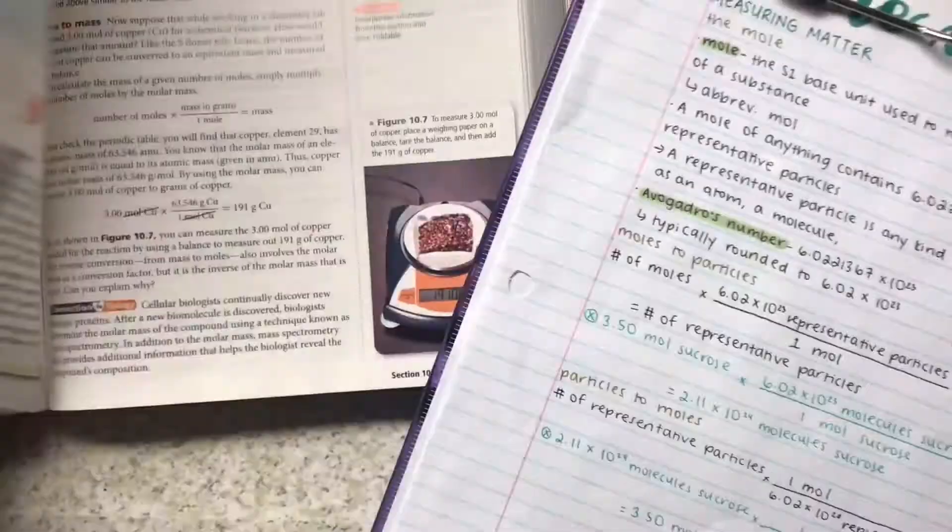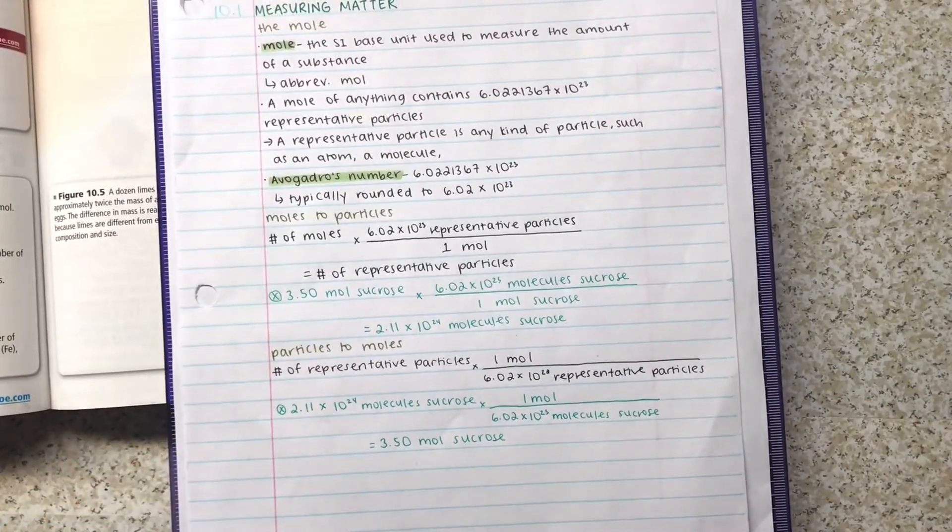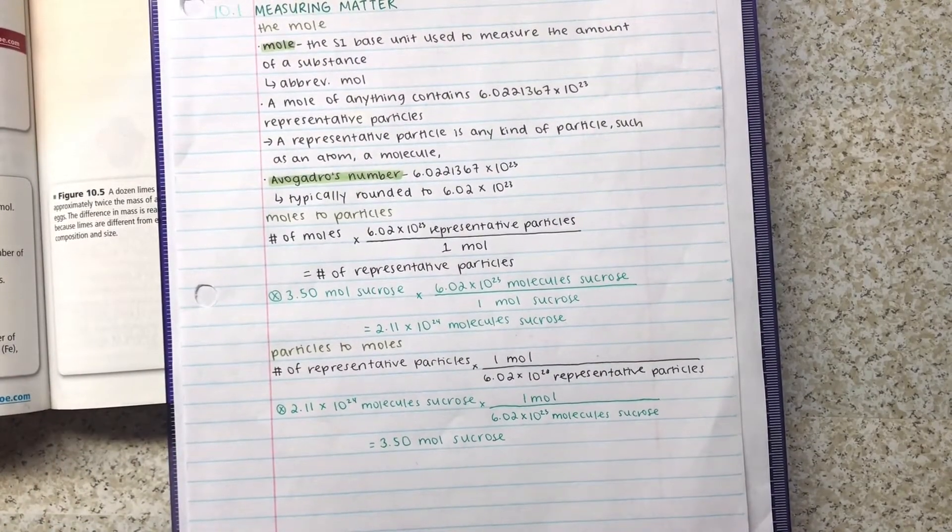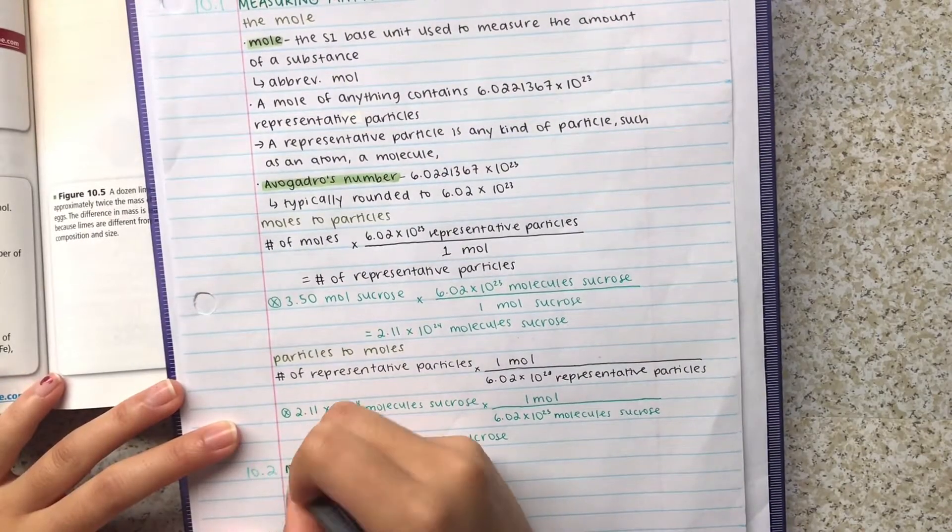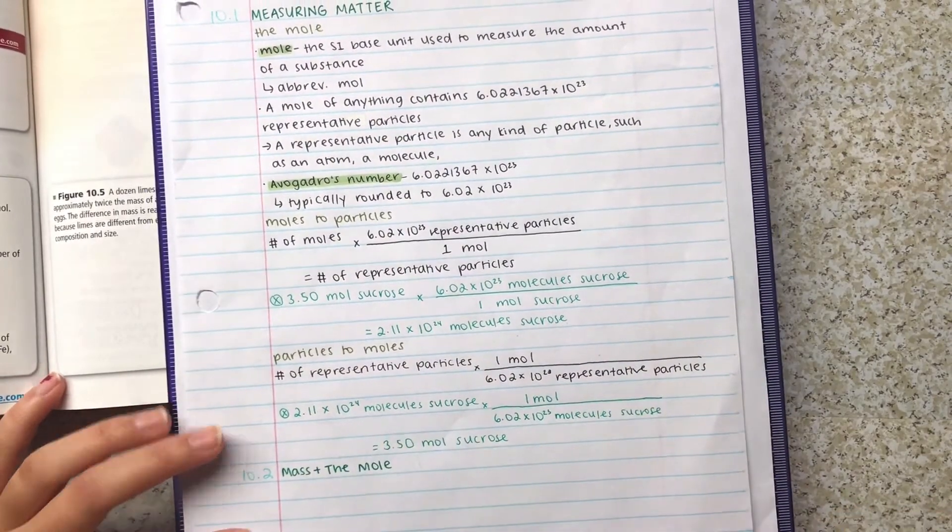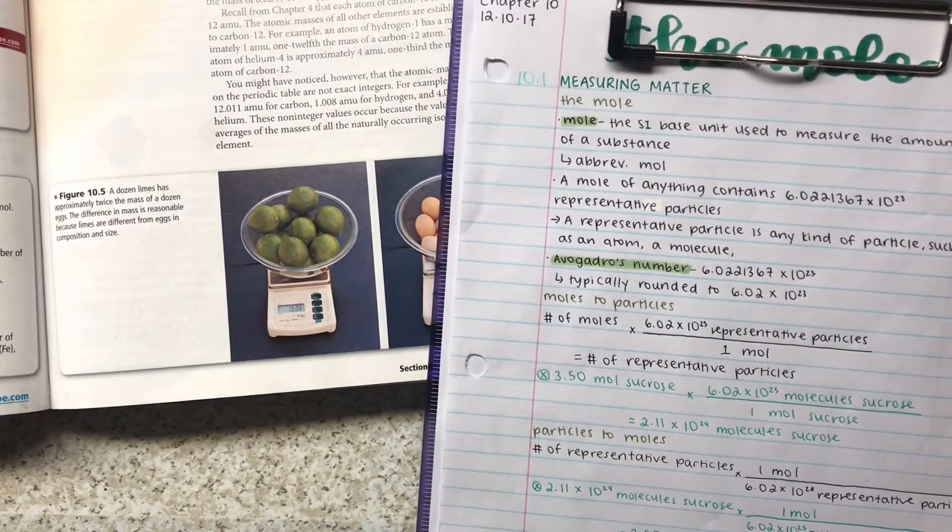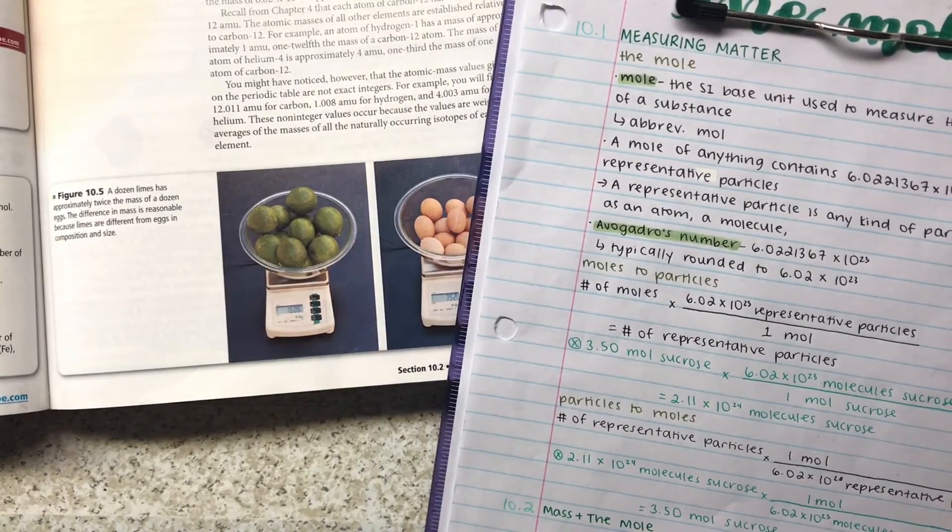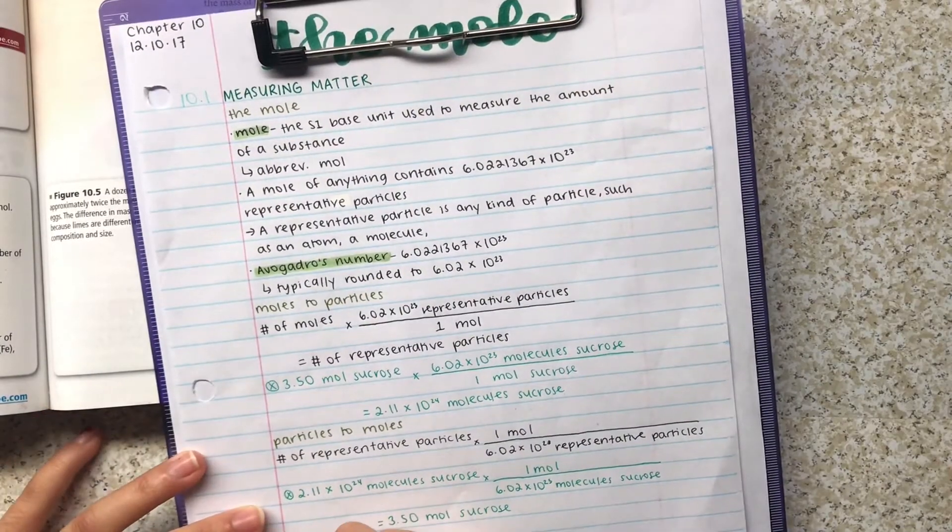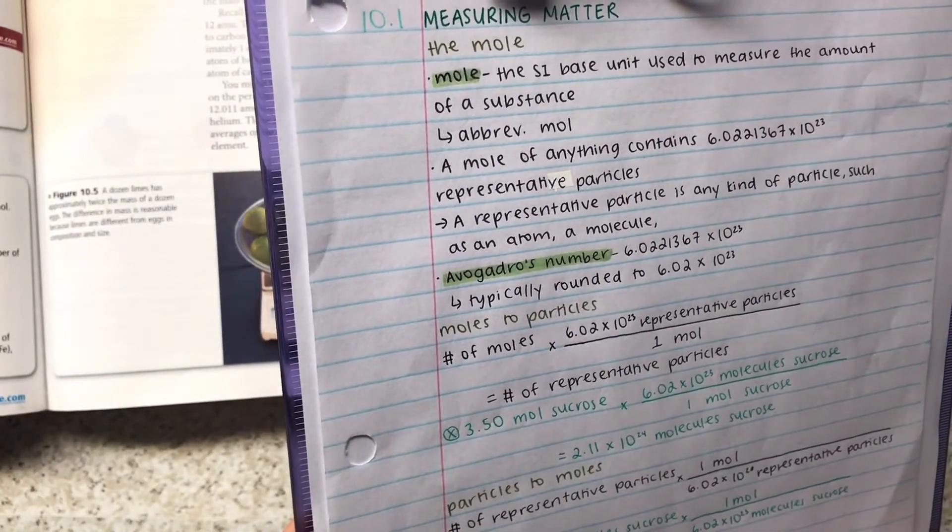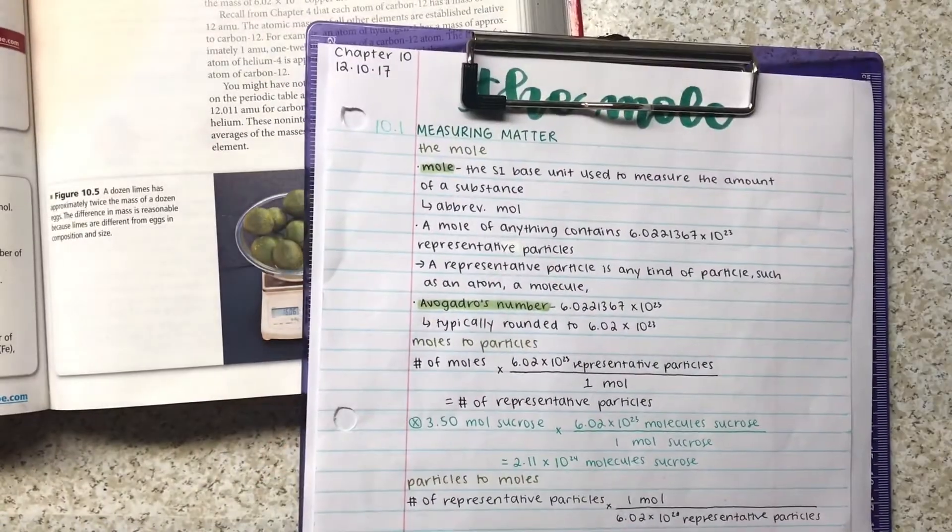I used the Pentel EnerGel pen for the main body in black, and I used the green, the darker green Muji pen for examples. And to denote examples I used an X inside of a circle, and I'm pretty sure Serena from Studying Here on YouTube uses the same method. I think that's where I picked it up.